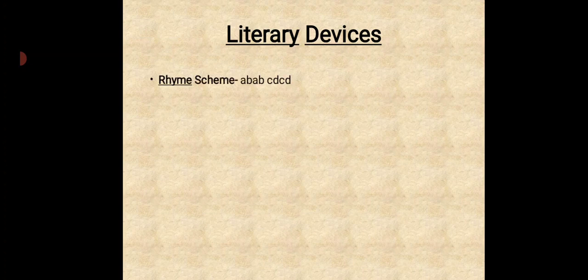So in the next slide, I have already given, go through the literary devices. So rhyme scheme A, B, A, B, C, D, C, D, or you can say A, B, A, B. Hold throughout the poem.